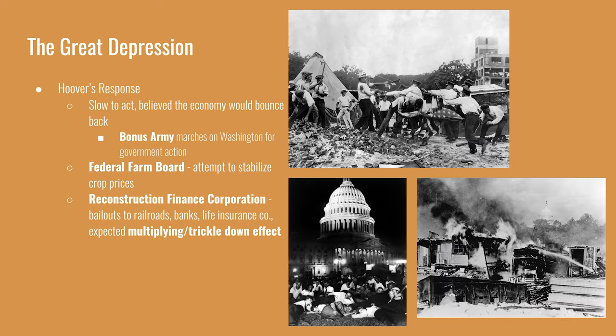Towards the end of his presidency, Hoover took some steps to lessen the Depression's effects, but it was seen as too little too late. The Bonus Army's march on Washington was composed of World War I veterans asking for relief. They had been promised a bonus for their service, not to be paid until the late 1930s. Since the Depression was so severe, they marched on Washington to convince Congress to pay the bonuses early. Hoover ordered General Douglas MacArthur to clear the marchers from the grounds, and over 50 of the marchers died in the struggle.